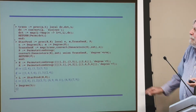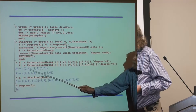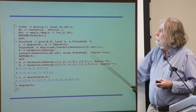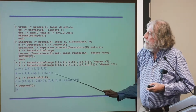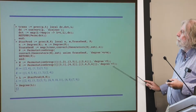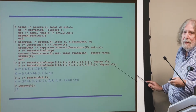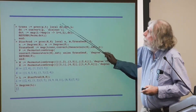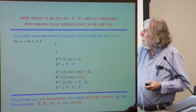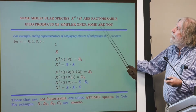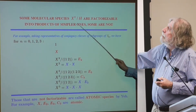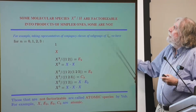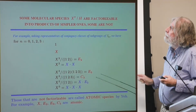This is called the star product or external product by Yeh. It is isomorphic to H cross K, but lives in S_{n+m}. It is very easy to implement: H is a subgroup of S_4, while the star product goes to S_7 in Maple notation, and the star product is easy to program. Now, some molecular species or combinatorial monomial powers are factorizable and some are not. X squared equals X times X, because an X-squared structure is one X-structure followed by another X-structure.